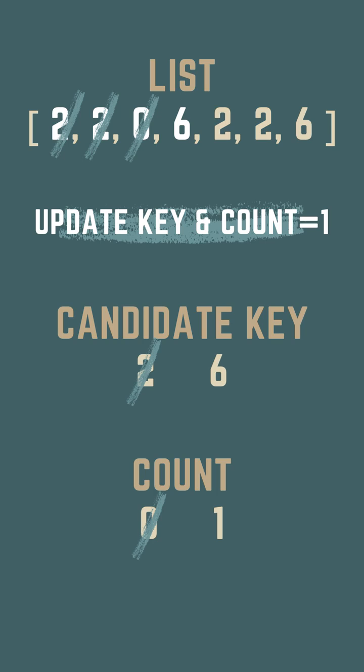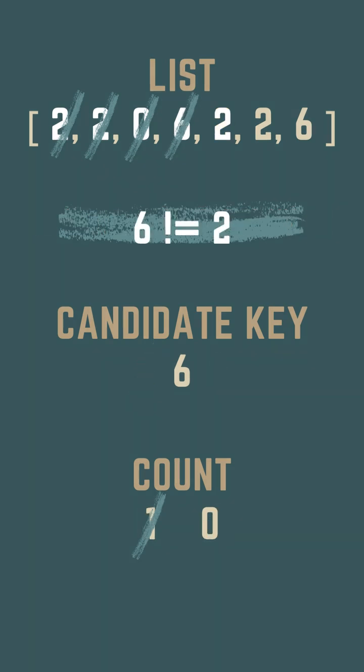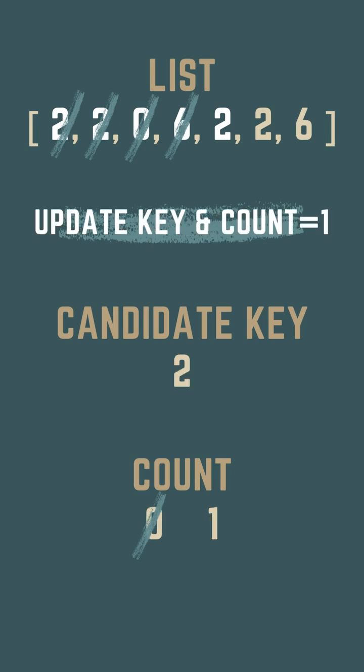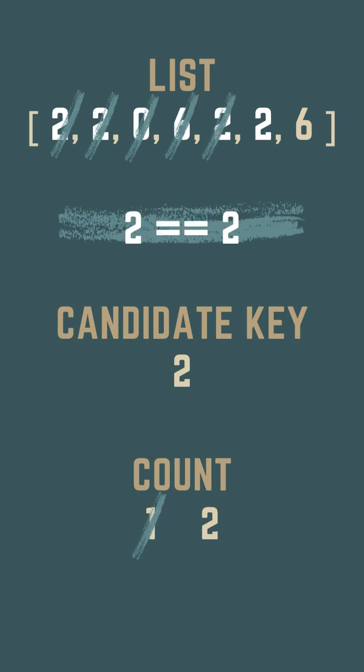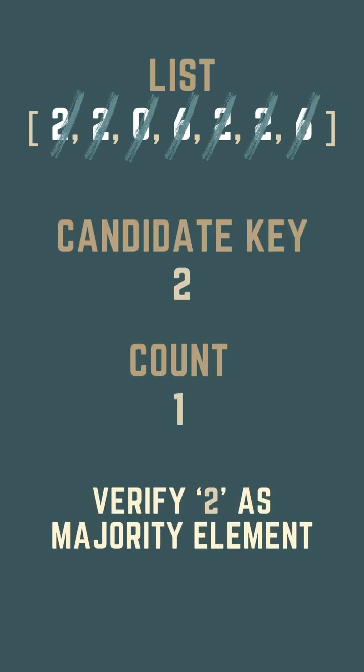Similarly, candidate key 6 does not match with 2, so the count decrements to 0. As the count reaches 0, the candidate key is updated with 2 with count 1. Now it matches with 2, so count increments. Then 6 doesn't match, so count decrements. At last, we got 2 as the candidate key.